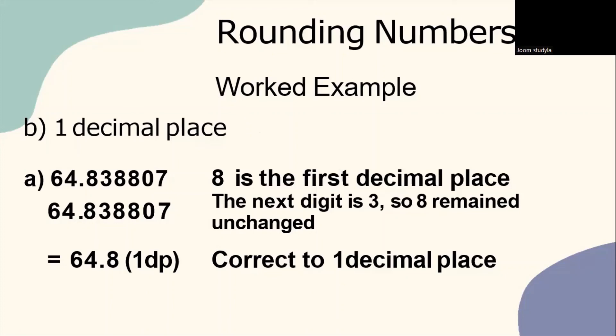When you want to round to the first decimal place, you have to look at the digit that next to decimal point, 8 and the next digit is 3. Because 3 is less than 5,